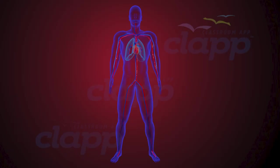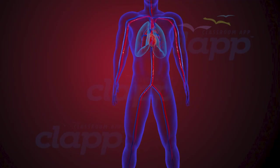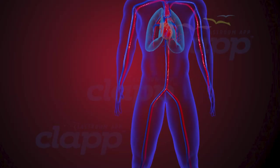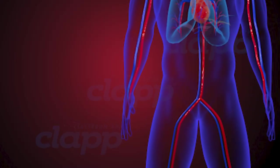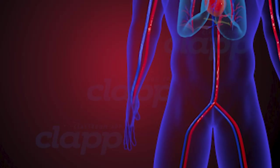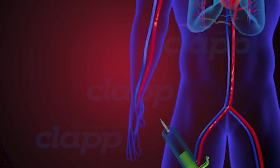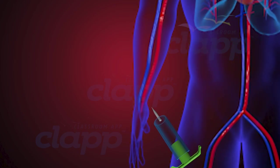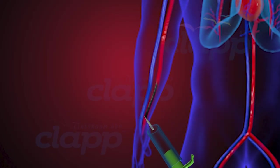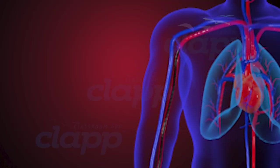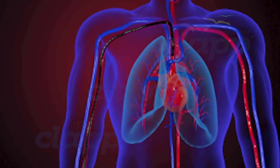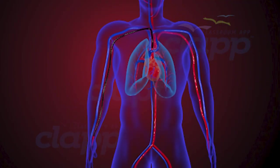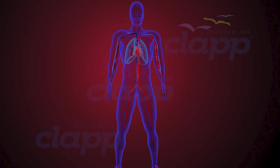Most commonly used entry points are the radial artery and femoral artery. The radial artery approach — also called the radial or wrist approach — involves gaining access to the arterial system through the radial artery in the wrist. This approach has gained popularity due to its advantages, including a lower risk of complications and enhanced patient comfort. A catheter is carefully threaded through the radial artery, allowing access to the coronary arteries. Patients often experience quicker recovery times, reduced bleeding complications, and increased overall satisfaction.